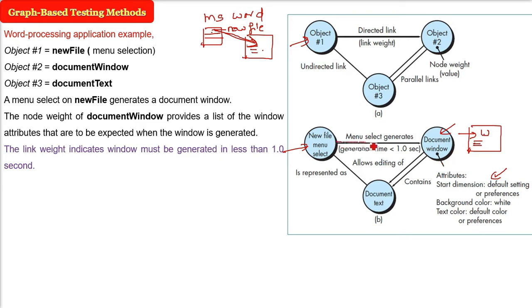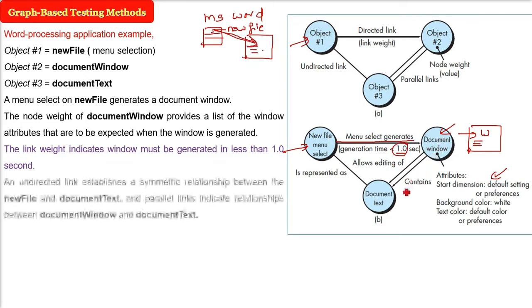And now we are giving link weight also. So let us say it is one second. So this link indicate that whenever we press the new file button or menu, it should generate below one second in the document window.